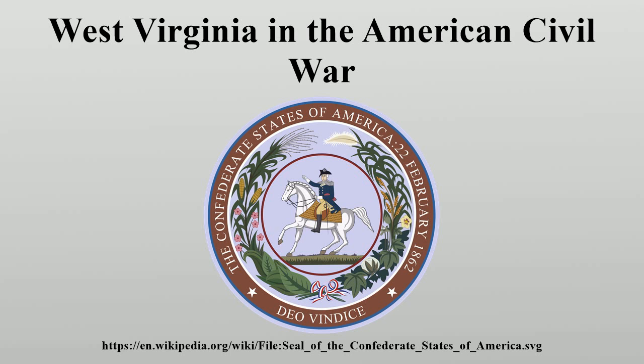There were two minor Confederate expeditions against the northeastern corner of the state: Jackson's Romney expedition in January 1862 and the Jones and Bowdoin raid in May-June 1863. Union strategy for the region was to protect the vital B&O Railroad and also attack eastward into the Shenandoah Valley in southwestern Virginia. This latter goal proved impossible due to the poor roads across mountainous terrain.